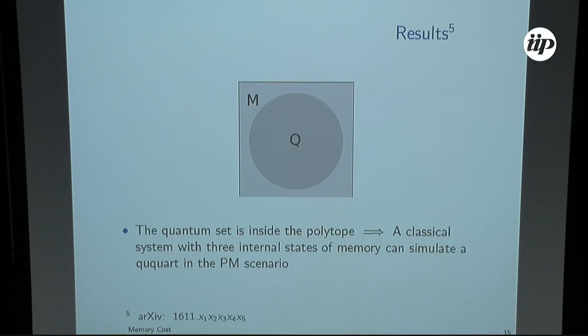We did this, and the result was that they were all positive semi-definite. That means that we can reproduce the Peres-Mermin scenario. The ququart with a machine with three states. Of course, if we use the same machine with quantum states, we can do with a qutrit. We are left with the question if we can use a quantum system, a qubit for example, to reproduce the same correlations.